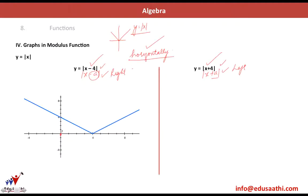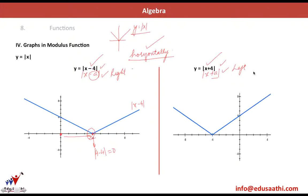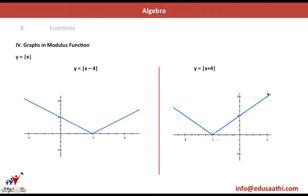For |x - a|, the point of minima shifts a places to the right — instead of being at (0, 0) it moves to (4, 0) for |x - 4|. You can verify: putting x = 4 gives 4 - 4 = 0, which is the minima. For |x + 4|, the graph shifts four places to the left, giving a graph with minima at (-4, 0).